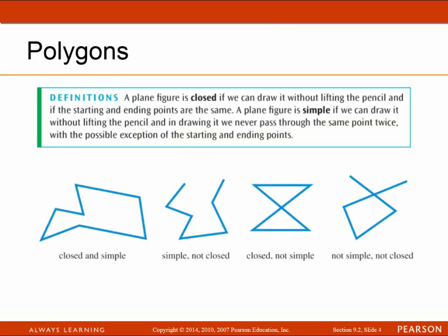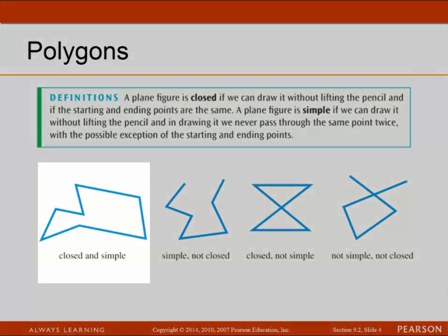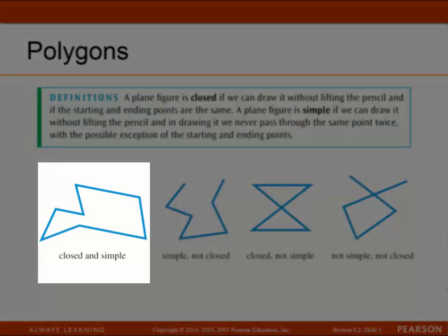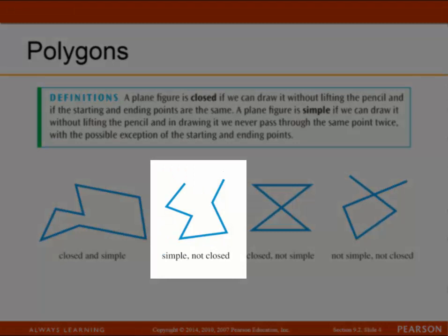Let's do some definitions first. A plane figure is closed if we draw it without lifting the pencil and the starting and ending points are the same. A plane figure is simple if we can draw it without lifting the pencil and never pass through the same point twice, with the possible exception of the starting and ending points. Here you see four different diagrams, and the first one is closed and simple — we can start at any point, draw the entire figure, and end up back at the starting point without having gone through any point twice.